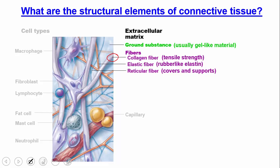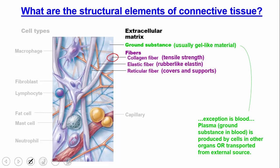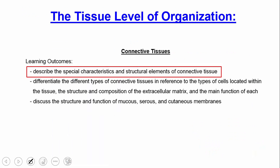The ground substance is usually a gel-like material, almost like gelatin or jello. The exception is blood — in blood, something called plasma is the ground substance, and it's produced in other organs and transported from an external source. So blood is the oddball when we talk about this type of connective tissue.